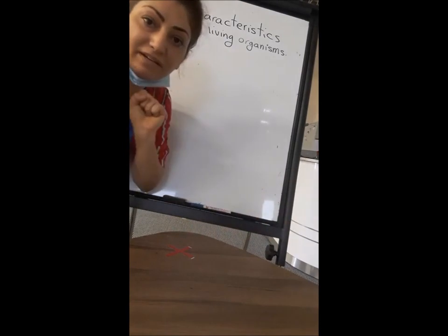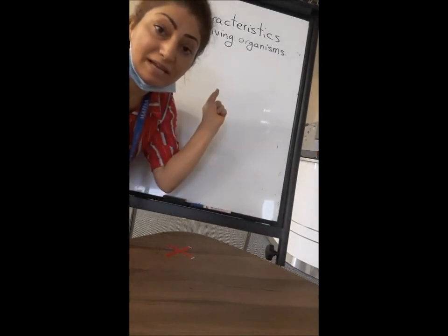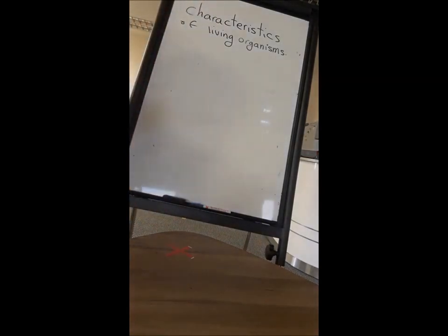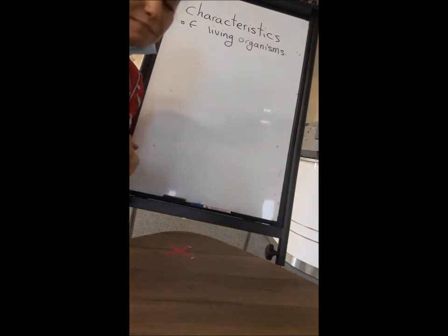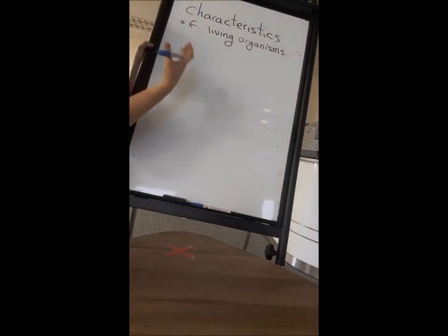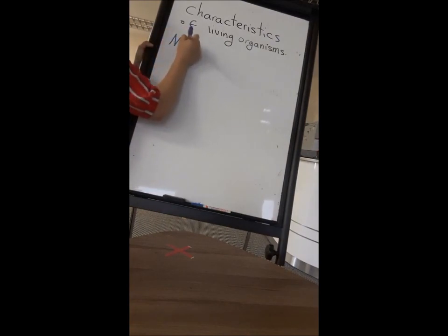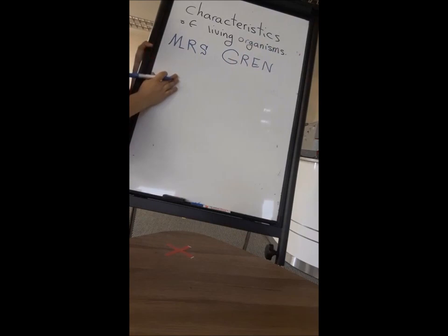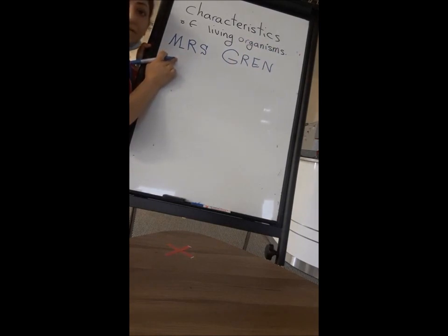I'll write the criteria for you. If something is doing this, it's alive; if not, it's dead. To make it easy to memorize and use, I'll give you a secret code — no need to know all the criteria one by one. The secret code is MRSGREN. Why MRSGREN? The letters come from the initials of some key words.